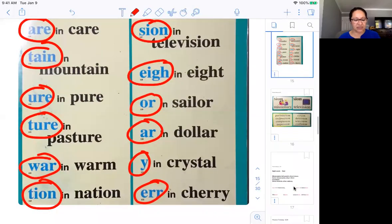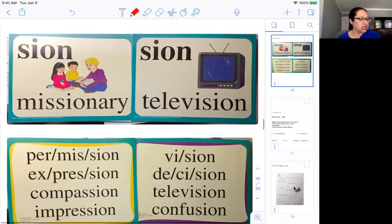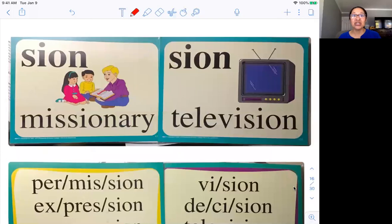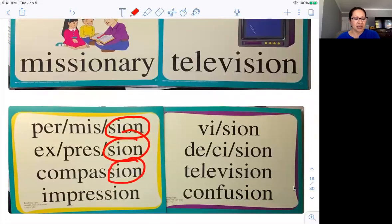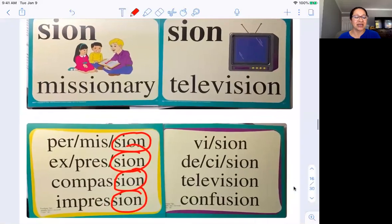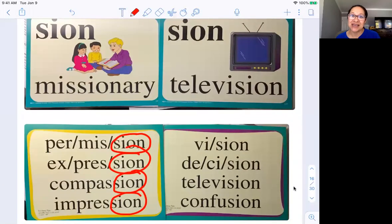Okay, we're waking up this morning. We have two special sounds today. One of them is shun in missionary, S-I-O-N, and the other one is shun in television, S-I-O-N. So they have the S-I-O-N the same, but they sound different. Shun and zhun. So let's look at some special sounds for shun in missionary, S-I-O-N. Permission, you see that? Expression. Compassion. Impression. These are some words that have the shun in missionary, S-I-O-N.